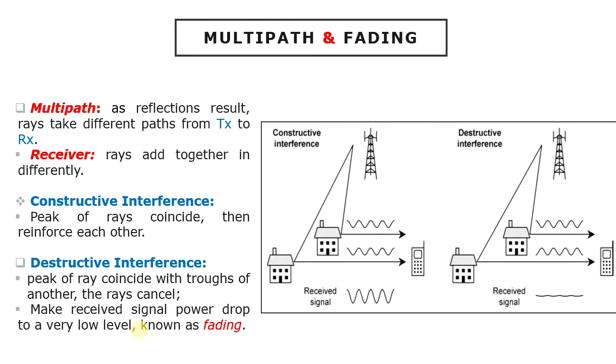Destructive interference can make the received signal power drop to a very low level, a situation known as fading. The result increase in the error rate makes fading a serious problem for any mobile communication system.